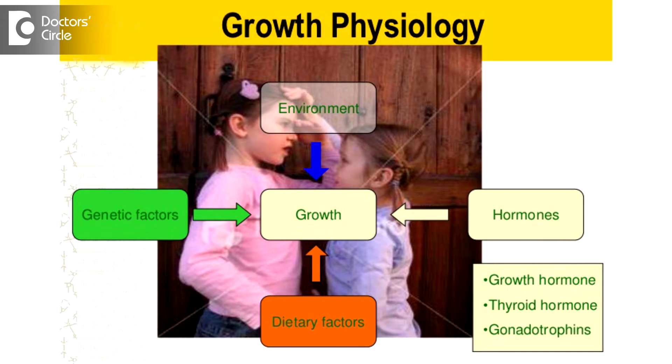For many parents, the stature of their children is a matter of anxiety. Except for very tall parents, many parents of medium or short height tend to have children who are short. That is because 50% of height potential is explained by genetics, and some say even up to 75%. The remaining 25% depends on environment — nutritious food and freedom from chronic or repeated acute illness.